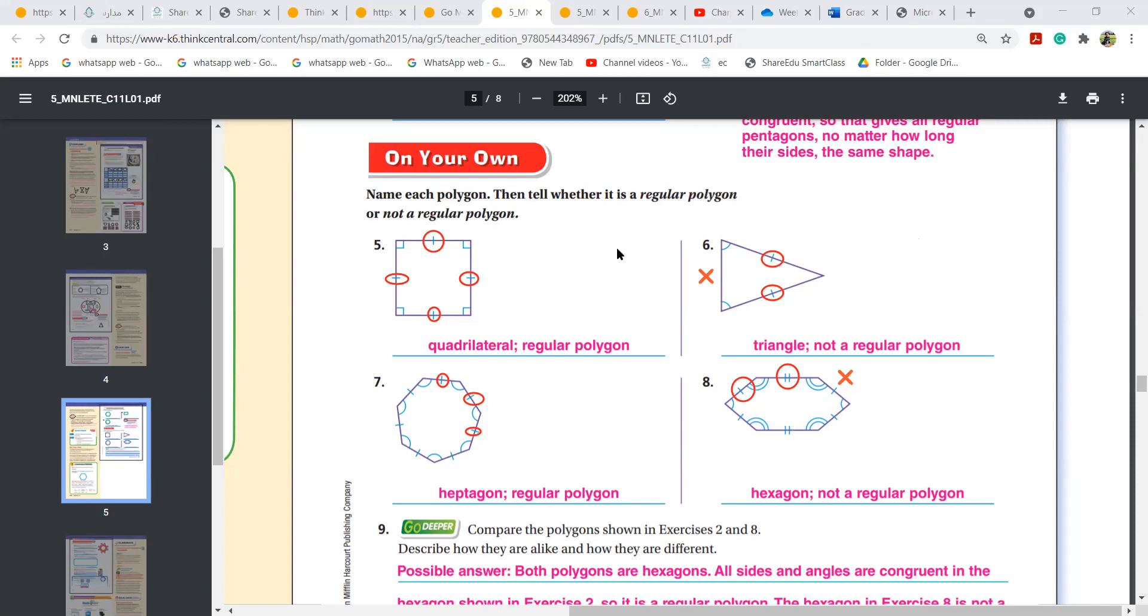Haifa, you need to count the sides. If you have four sides, it's called as quadrilateral. If you have three sides, it's called as triangle. You need to memorize this. If you have seven sides, you're going to call it as heptagon. If there are six sides, hexagon. You need to learn this. Okay, Haifa?